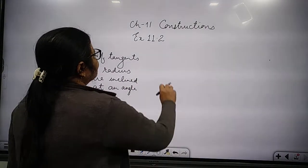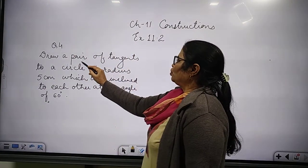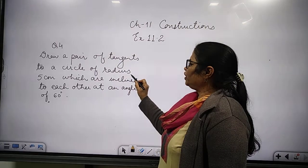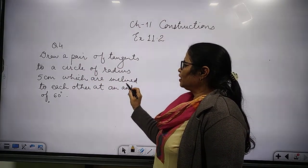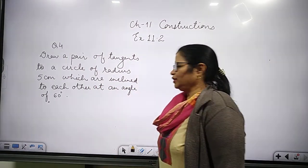Here, exercise 11.2, question number 4: draw a pair of tangents to a circle of radius 5 cm which are inclined to each other at an angle of 60 degrees.